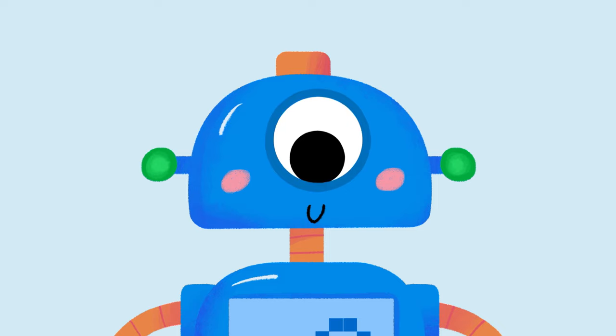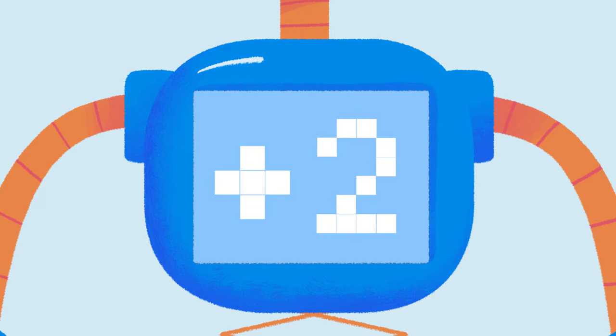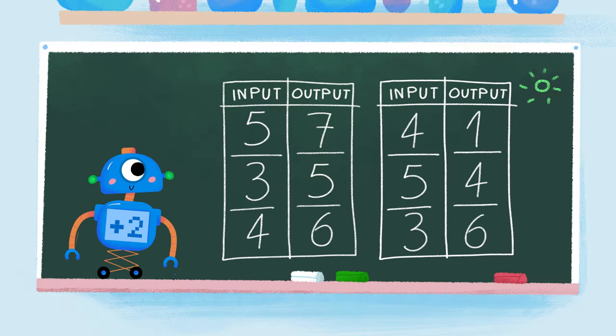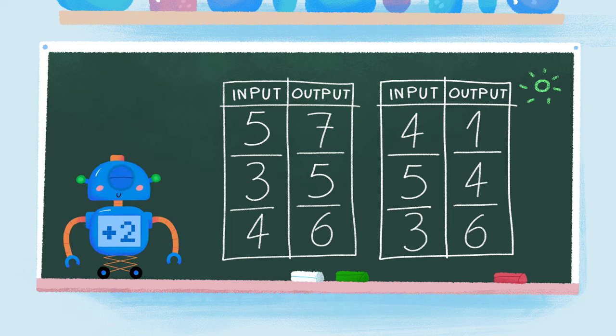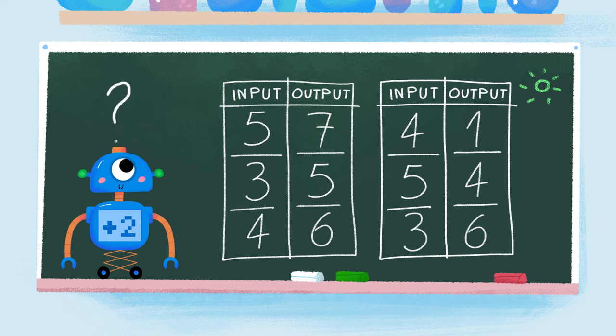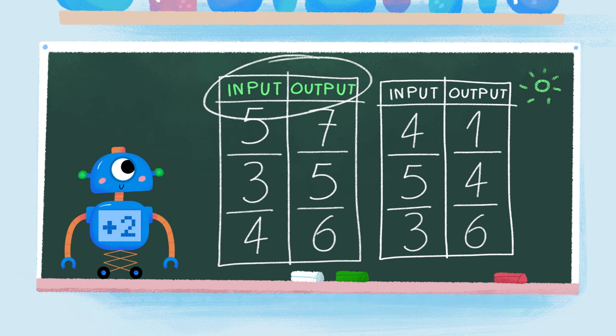This robot has the rule plus two. Look at these charts. The rule works for one of them, but which one? Well, first we have to study the tables. Do you know what input and output mean?